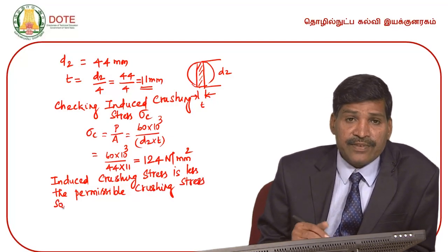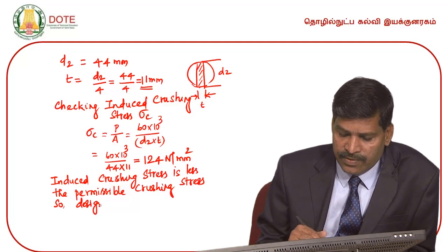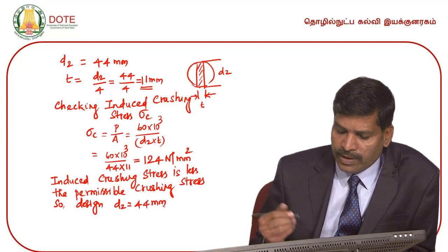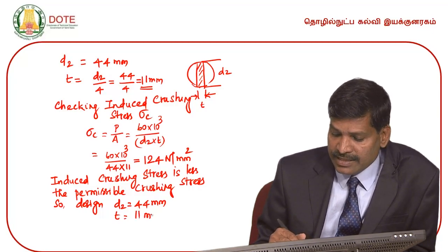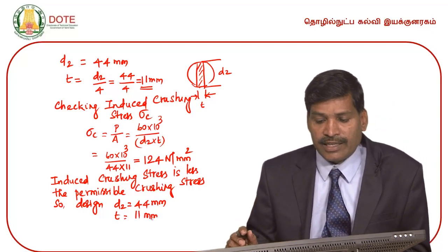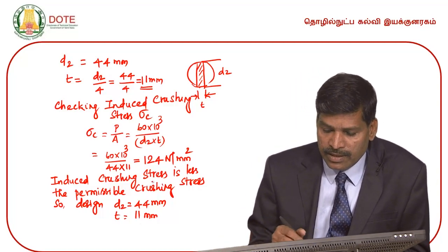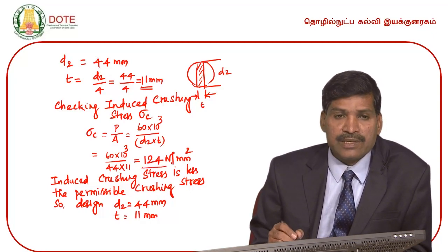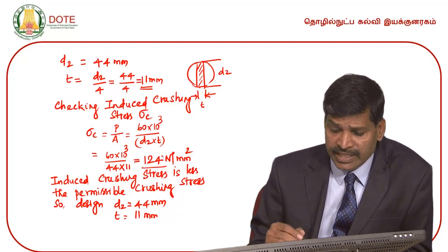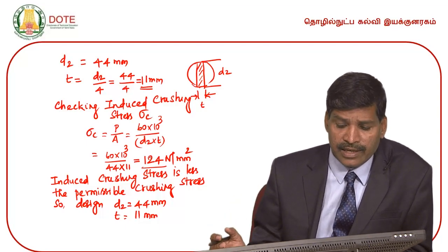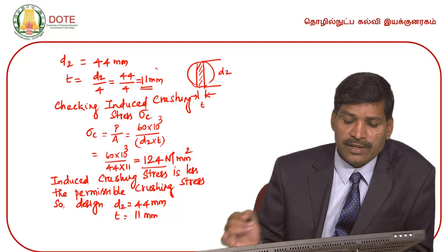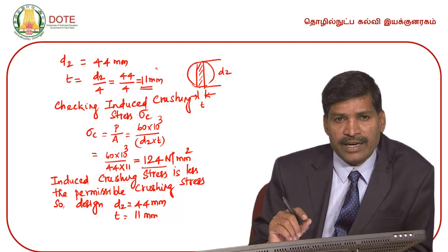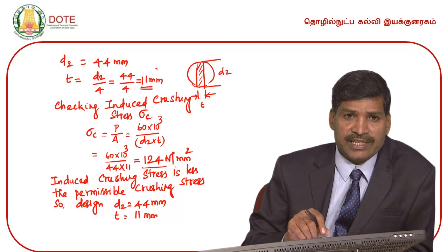So the design is valid. Therefore D2 = 44 mm, thickness of cotter = 11 mm. The induced crushing stress is 124 N/mm², which is just within the permissible limit of 125 N/mm². If required, the thickness of the cotter can be increased to 12 mm or 13 mm to reduce the induced crushing stress further.